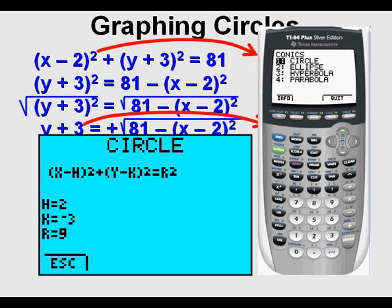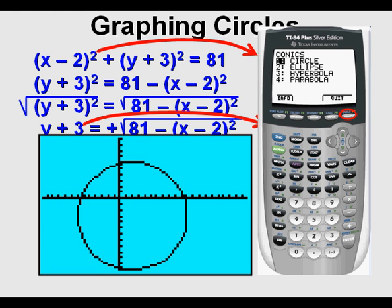That would be an H of 2, a K of negative 3, and a radius or R of 9. Press GRAPH. We see our circle identical to the one we graphed earlier.